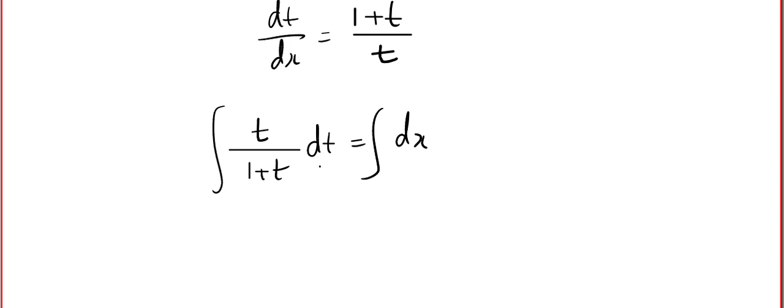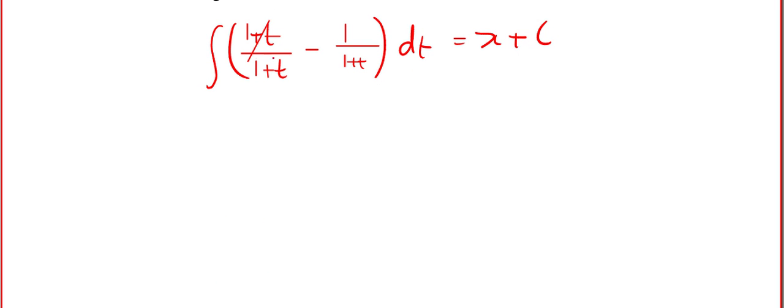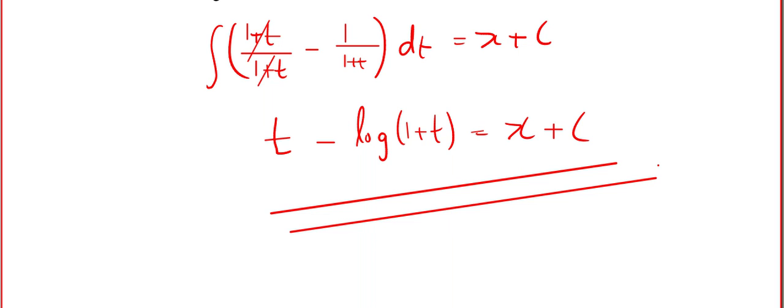Now take LCM and that will give us t/(1 + t) dt = dx. Now do not forget, when you have the same degree, the method is very simple. Create the denominator. What is the denominator? 1 + t. So just add 1 and subtract 1 and divide separately. You can see the second term and first term, divide separately. So this will get cancelled. Integration of 1 is t. Let us do one more question.